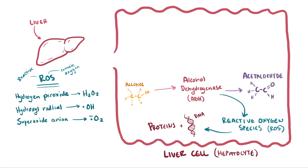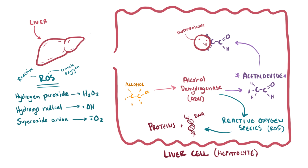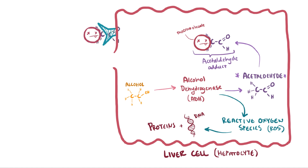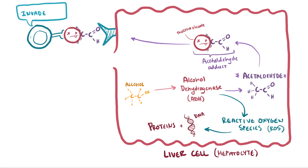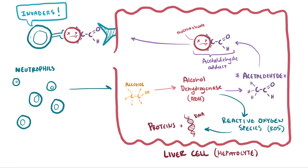Besides producing reactive oxygen species, we've also got acetaldehyde to worry about. This compound can bind to macromolecules, enzymes, the cell membrane, and all sorts of other compounds inside the cell. When they bind to some of these, they effectively inhibit that molecule, forming what are called acetaldehyde adducts. When those are formed, your immune system recognizes these new compounds as foreign and starts sending neutrophils to clean up the damage. So you get both adducts disrupting molecular function and destruction of hepatocytes by neutrophilic infiltration.